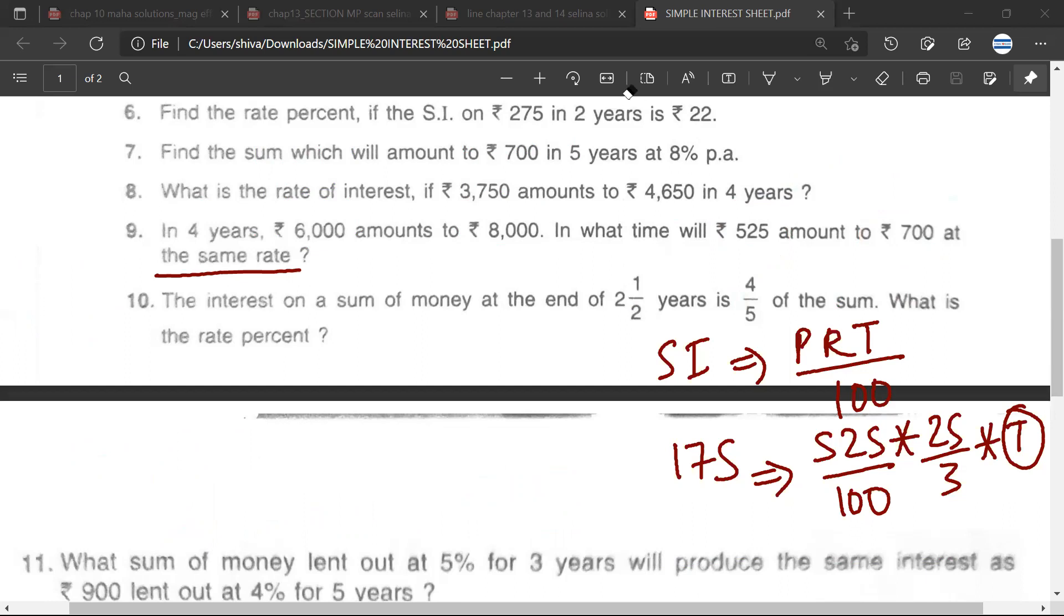So it's going to be 175 into 100 upon 525 into 3 upon 25. Mr. Sarthak, is it correct? Yes.